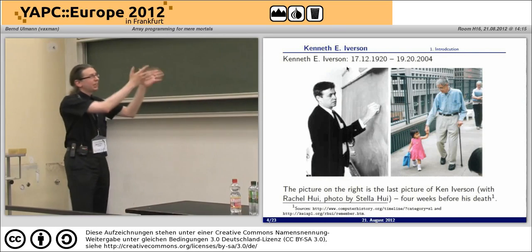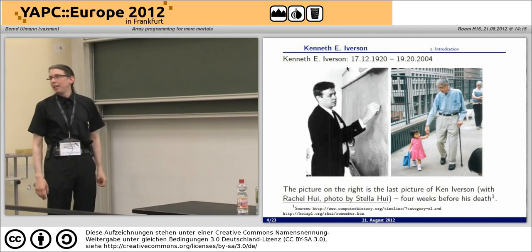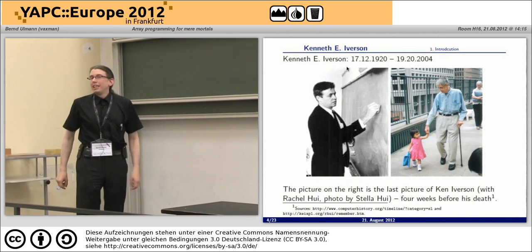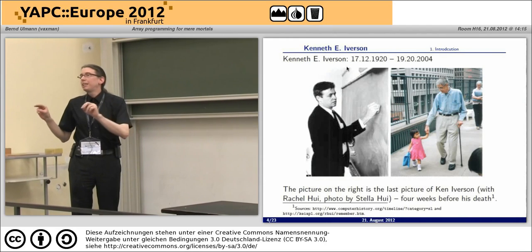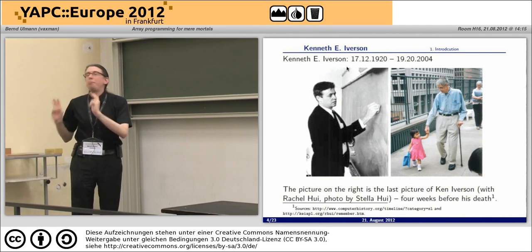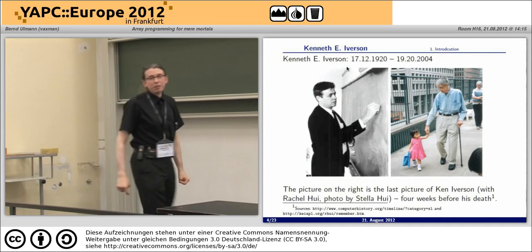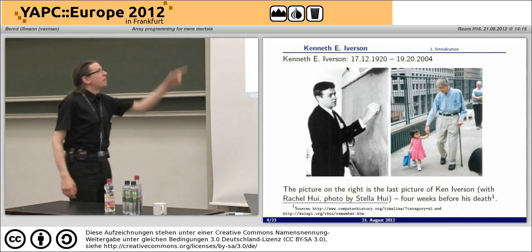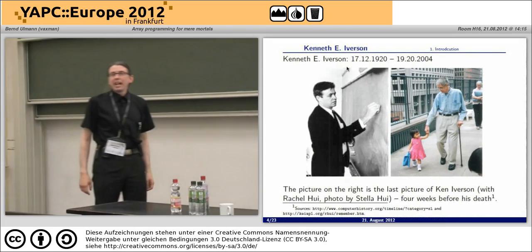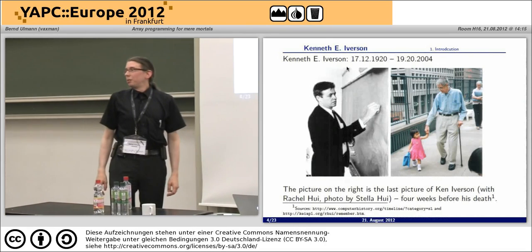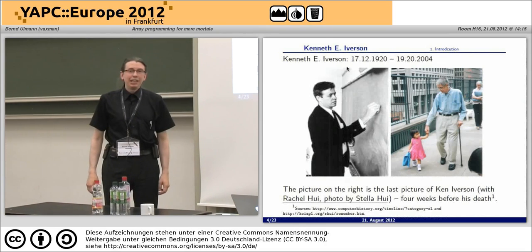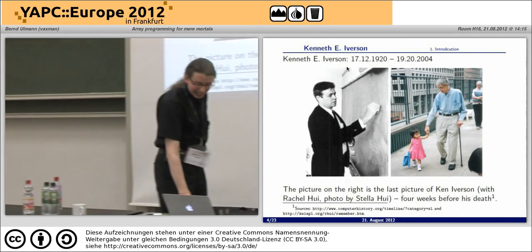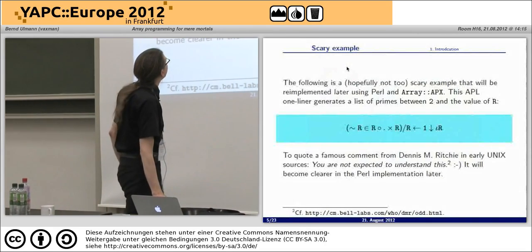APL was developed by Ken Iverson — just so you have seen the master himself in an early picture while working at IBM. At first he wanted to call his notation 'Iverson's Better Math' — IBM — but IBM forbid the use of this acronym, and the only thing he could come up with was 'A Programming Language,' APL. The picture on the right is the last picture of Ken Iverson; he literally died in front of his computer developing the J interpreter, which is a brilliant way to die for a programmer.